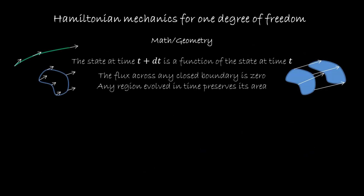So instead of thinking of Hamiltonian mechanics for one degree of freedom as those two equations, we can think about it as two statements: that the state at time t plus dt is a function of the state at time t, and that the flux across any closed boundary is zero — or equivalently, that any region evolved in time preserves its area. The question is going to be: what is the meaning of this in terms of the physics? We're going to see this in the next section.